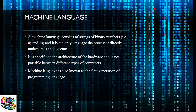Machine language is specific to the architecture of the hardware and is not portable between different types of computers. For example, the zeros and ones for a Nintendo game will be different from those of a laptop — since they don't use the same CPUs, the same instructions may carry different meanings or not perform the same operations. Machine language is also known as the first generation of programming language.